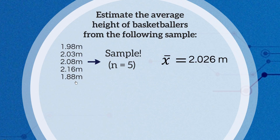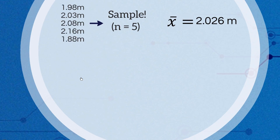The population this question refers to is all basketballers — typically all basketballers currently playing. Of course, that's not an infinite number, but it's large enough that we can treat it as effectively infinite. And that's essentially what you're going to be doing every time you take a sample.